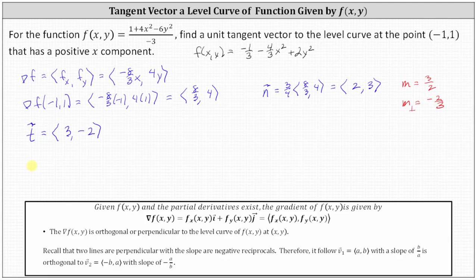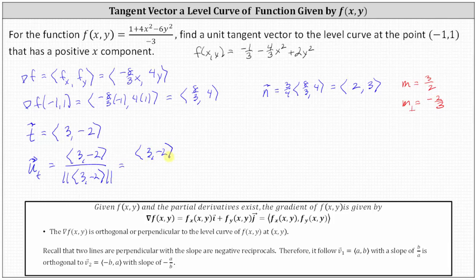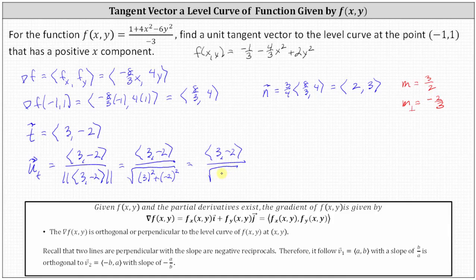We have a tangent vector to the level curve at the point negative one comma one, but we want a unit tangent vector. The unit tangent vector u sub t is equal to the tangent vector t, three comma negative two, divided by its magnitude. The magnitude is equal to the square root of the sum of the square of three and the square of negative two, which equals the square root of 13. So the unit tangent vector has an x component of three divided by square root 13 and a y component of negative two divided by square root 13.